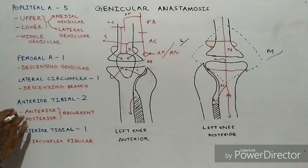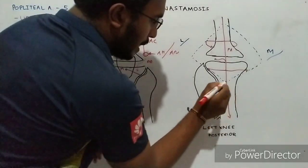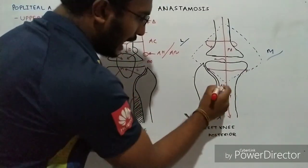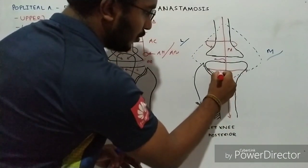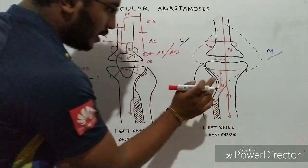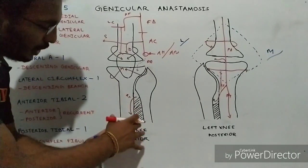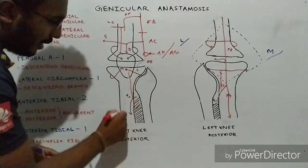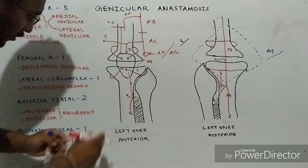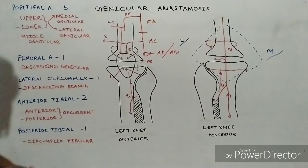From the anterior tibial artery, there are two branches that contribute to the anastomosis: the anterior recurrent and the posterior recurrent. As its name suggests, when the anterior tibial artery still lies in the posterior aspect, it gives an ascending branch called the posterior recurrent branch. Once the anterior tibial artery enters the anterior aspect of the leg, it gives another ascending branch called the anterior recurrent branch.